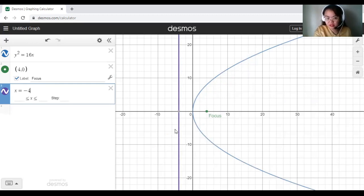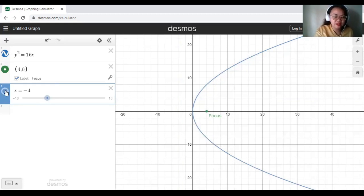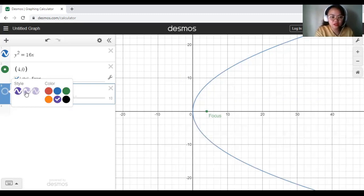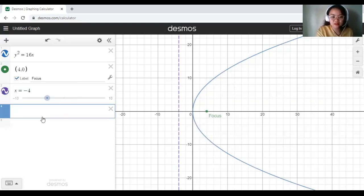That is our directrix over there, the purple line. Of course, we have to modify the purple line such that it would be stylized. All we have to do is to click this portion long enough so that the options will show and choose the dotted lines or the dashed line. And this is now the graph of your directrix.